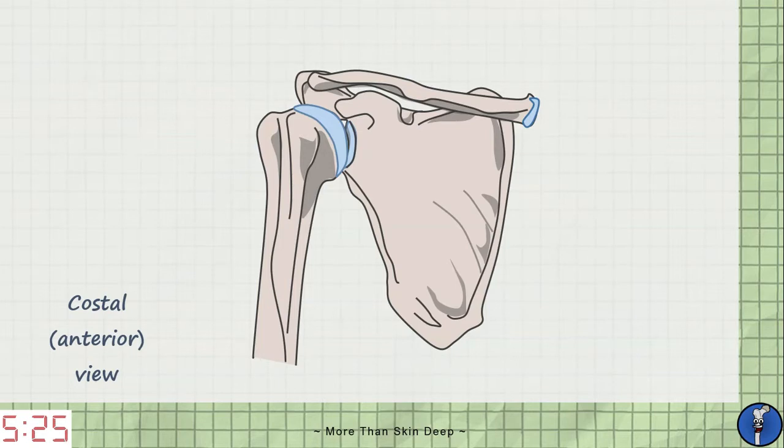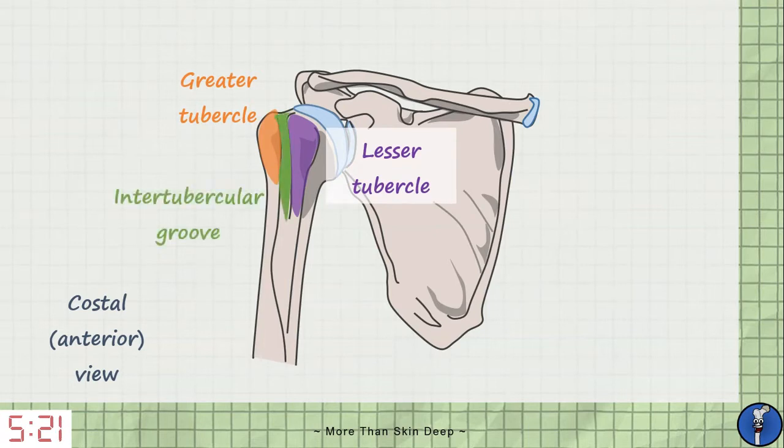On the humerus we have the greater and lesser tubercles and between them we have a groove known simply as the intertubercular groove. A tubercle is a protrusion in a bone that is associated with the attachment of a structure. The word comes from tuber which means lump.